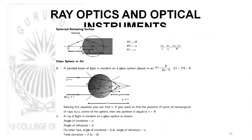For spherical refracting surfaces, the formula is mu2/v minus mu1/u = (mu2 minus mu1)/R, where R is the radius of curvature, v is the image distance, u is the object distance, and mu1 and mu2 are the refractive indices of the surrounding and glass respectively. For a glass sphere, the total deviation is given by 2*(alpha minus beta), where alpha is the angle of incidence and beta is the angle of refraction.